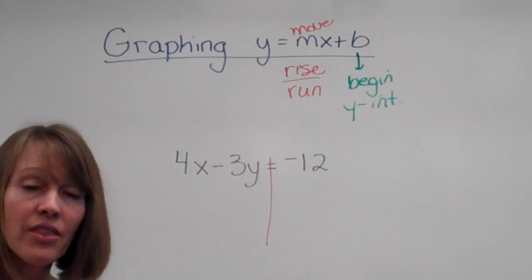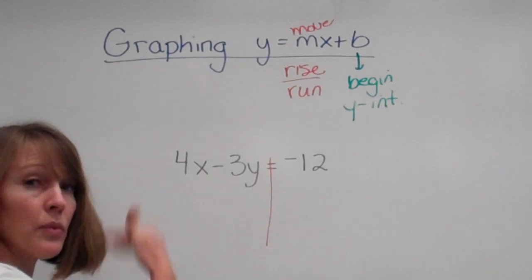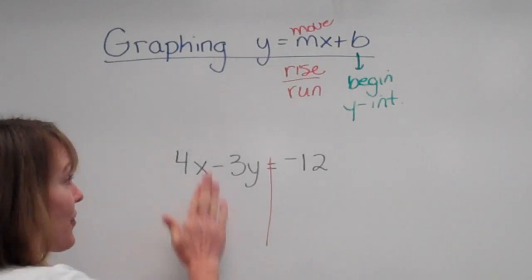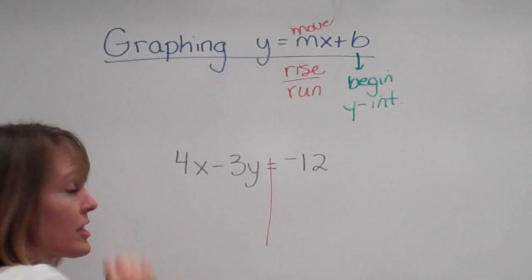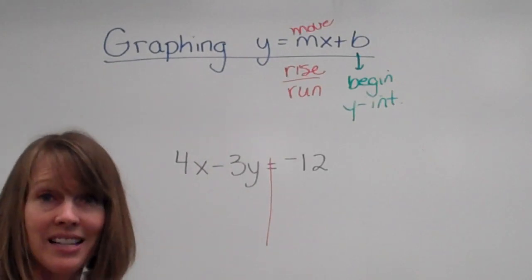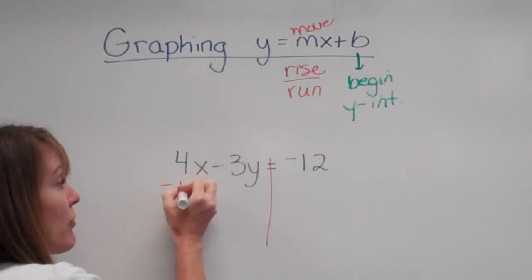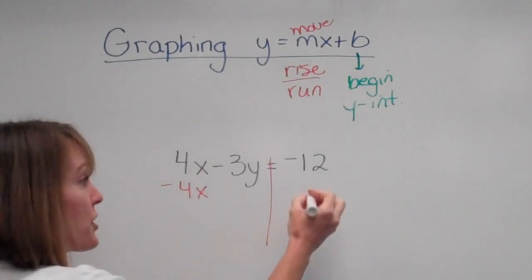Remember, if I'm trying to get the y alone, I'm trying to get rid of anything else that's there. If this just said 4, then I would get rid of it by subtracting 4 to both sides. However, it says 4x, but we're going to do the exact same thing. We're going to subtract 4x's from both sides.